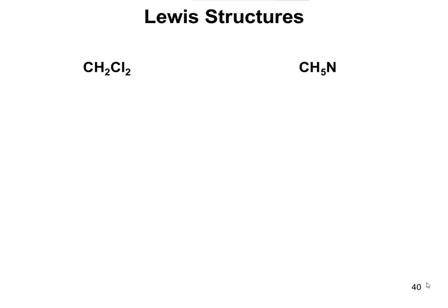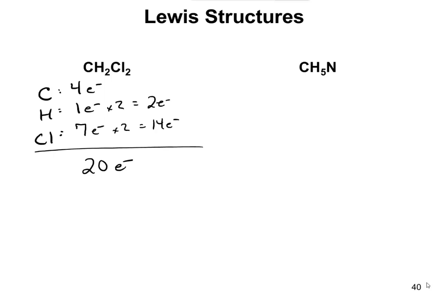Here are some practice examples. For CH2Cl2: carbon has four valence electrons, hydrogen has one, chlorine has seven. With two hydrogens and two chlorines, the total adds up to 20 electrons. Using your periodic table to confirm: carbon is in group 4, hydrogen is in group 1, chlorine is in group 7. So 4 plus 2 plus 14 equals 20 total electrons. Once we draw the structure, we have to account for all 20.